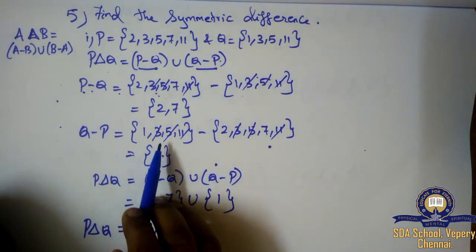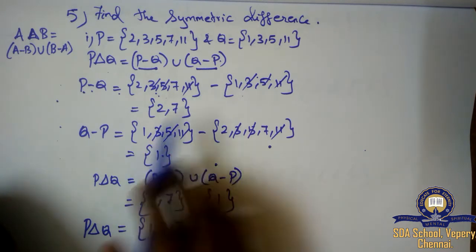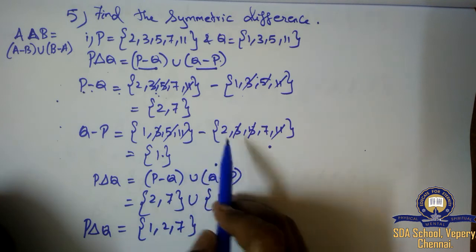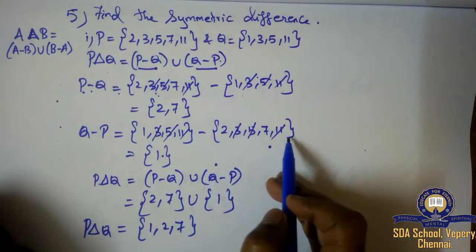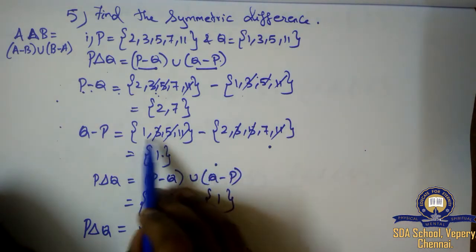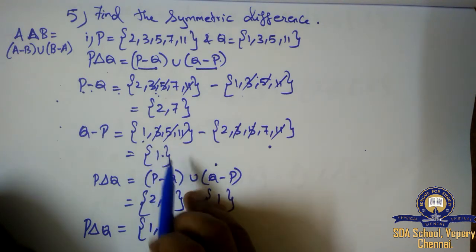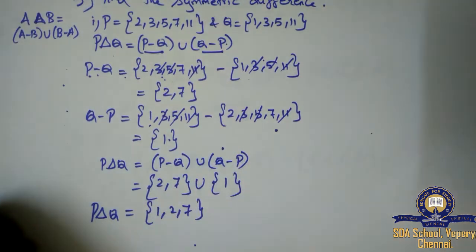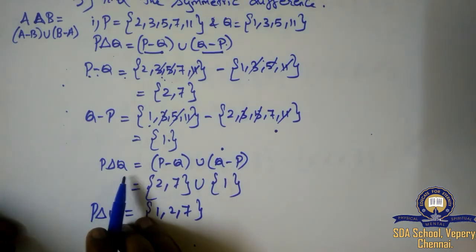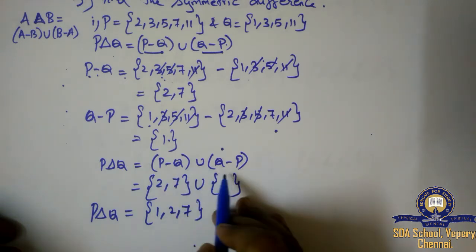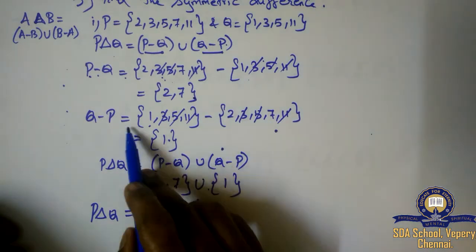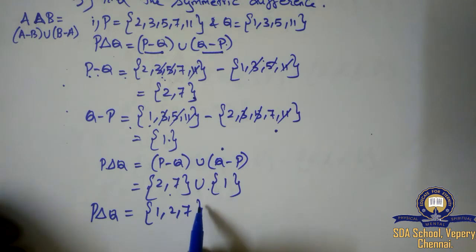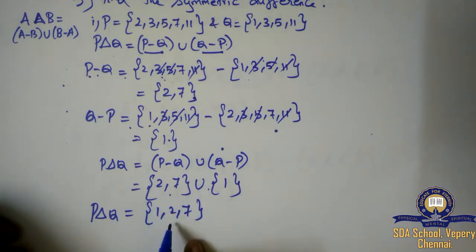Then Q minus P: Q values 1, 3, 5, 11 minus P values 2, 3, 5, 7, 11. The common elements 3, 5, and 11 get cancelled. The pending element from Q is 1, so Q minus P equals {1}. Now substituting in the formula: P symmetric Q equals (P minus Q) union (Q minus P) equals {2, 7} union {1} equals {1, 2, 7}.